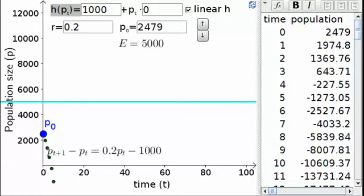The equilibrium value, i.e. the population size where the population stays constant, is shown at the top and by the horizontal cyan line. When the harvesting is a linear function of the population size, there is only one equilibrium.